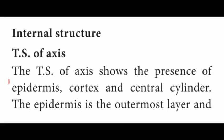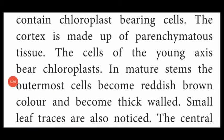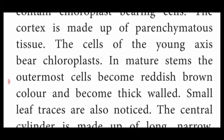Now, internal structure — T.S. of axis. The stem-like organ present in Funaria is known as the main axis. Taking a cross-section and placing it under a microscope, we can see the T.S. of axis. It consists of three important regions: epidermis, which is the outermost layer; cortex, which is inner to the epidermis; and a central cylindrical-shaped region. The epidermis is the outermost layer made up of parenchyma cells — closely packed single layer containing chloroplasts.